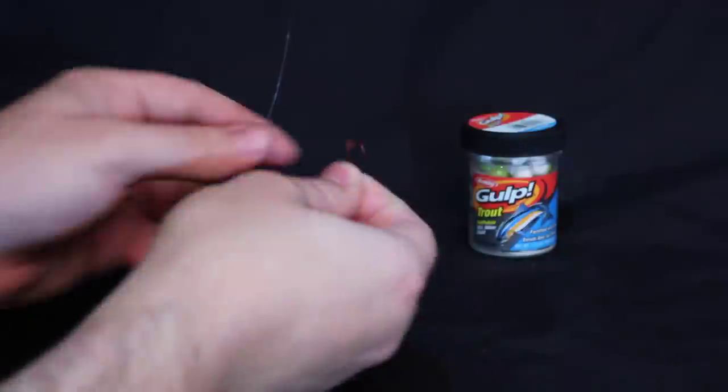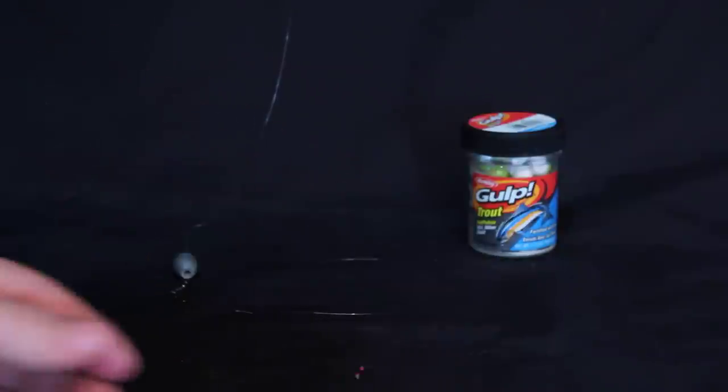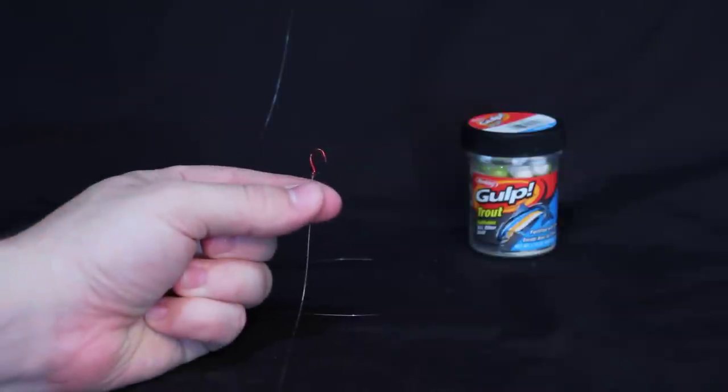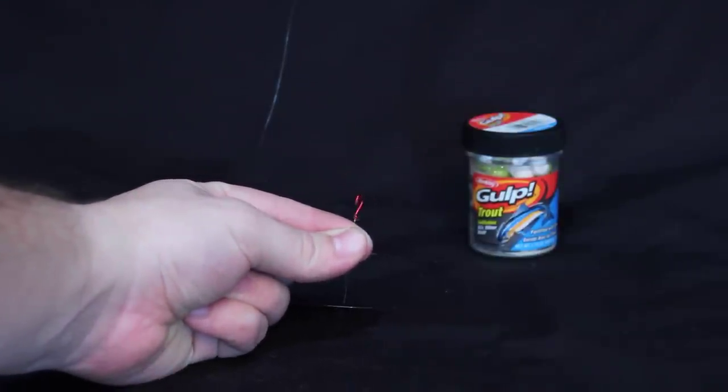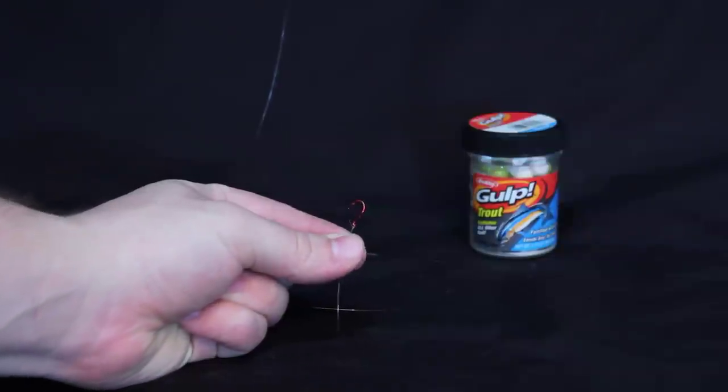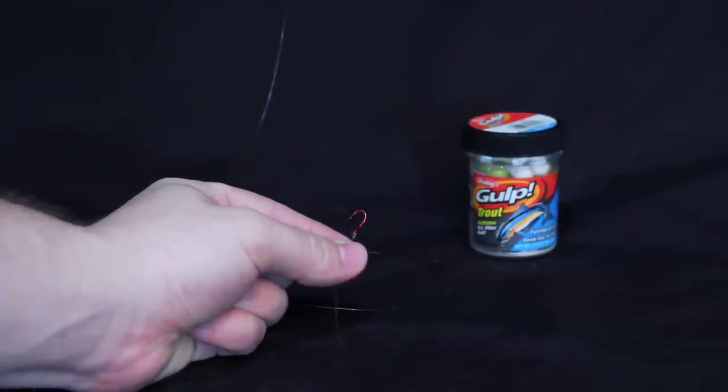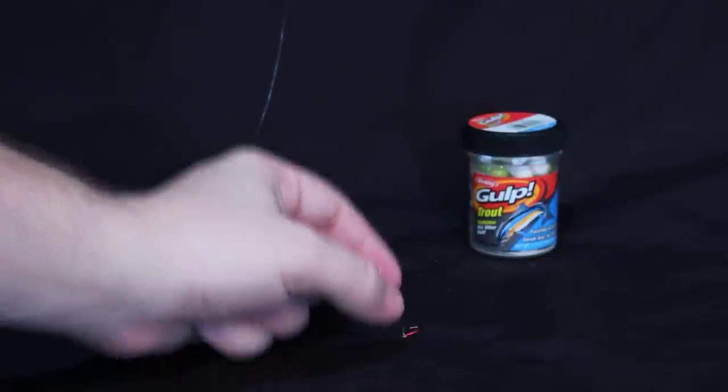I'm using a salmon egg hook, very small—this is a size 12 or 10. You can use this or you can use a treble hook; either work great.